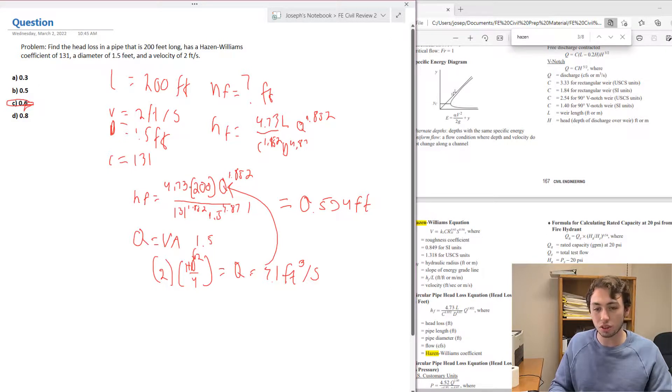So our final answer will be C for this problem. Remember the process here: we identified what we had, what we needed to find, we found two different equations that we ended up using - the head loss Hazen-Williams one and also the continuity equation Q equals V times A. That allowed us to get Q and we plugged that value back into the final equation and then we were able to find the head loss.